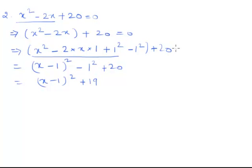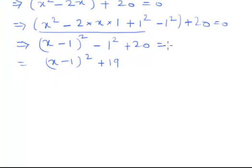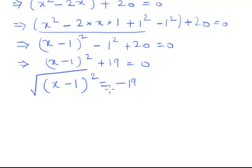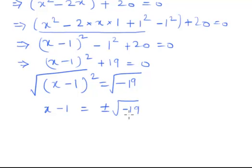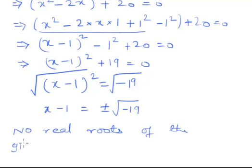Since I'm solving an equation, this implies (x - 1)² + 19 = 0, so (x - 1)² = -19. If I take the square root of both sides, there is no real root for -19. So x - 1 = ±√(-19), and since the value under the root is negative, the given quadratic equation has no real roots.